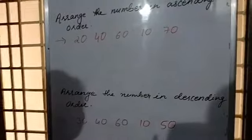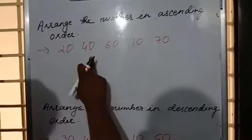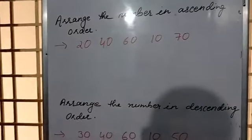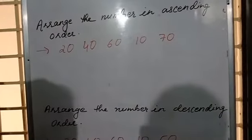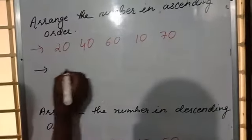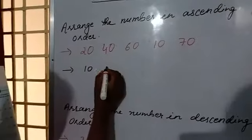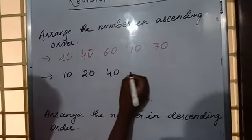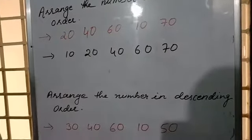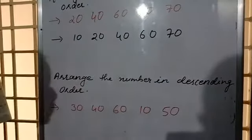Now let's do the exercise on page number 26 and 27. See how to arrange the numbers in ascending and descending. The first one is 20, 40, 60, 10 and 17. You have to arrange the numbers in ascending order. First we will write the smaller number, that is 10. Then after 10, we will write the greater number: 20, then 40, then 60, and last one is 70. Like that, you have to arrange the numbers from smaller to greater.